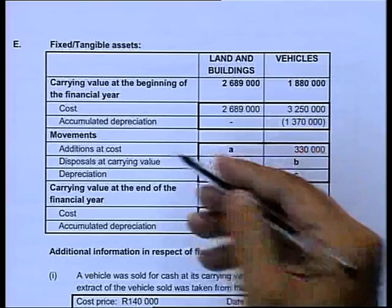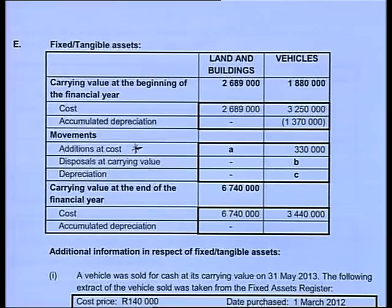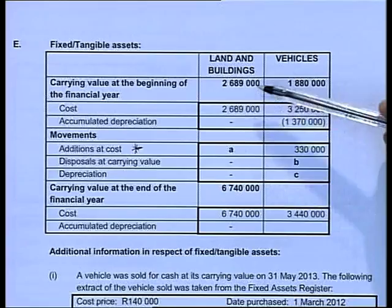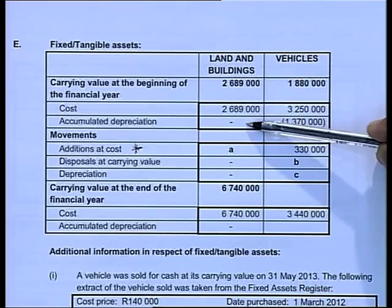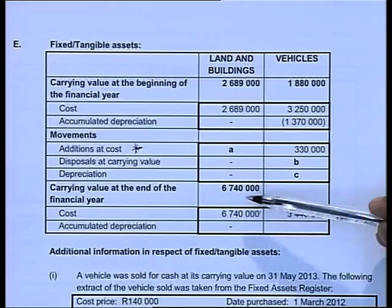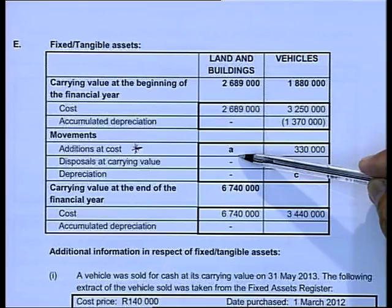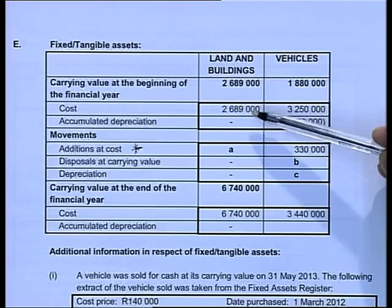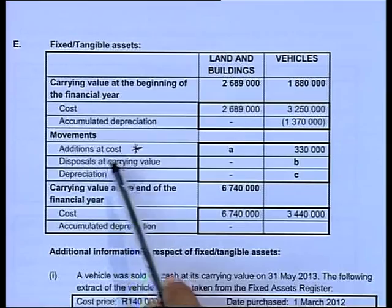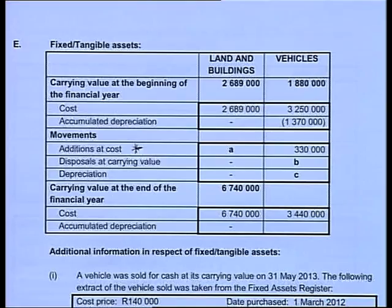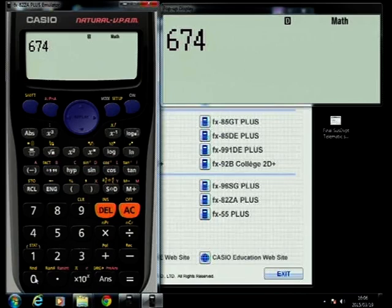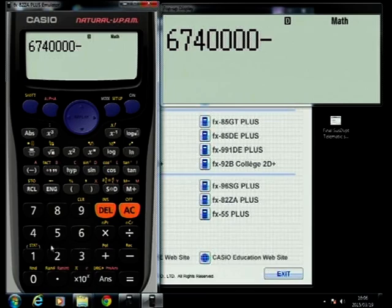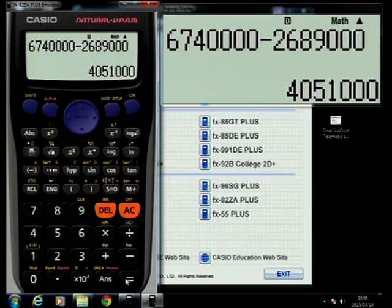The letter A refers to the additions at cost. We look at the land and buildings - they give you the cost and the carrying value at the beginning of the year. Please note that there is never accumulated depreciation on land and buildings. They also give you the cost and the carrying value at the end of the year. We can clearly see that the cost increased from the beginning to the end of the year, meaning there must have been an addition. The calculation is 6,740,000 minus 2,600,089,000. The answer is 4,051,000.